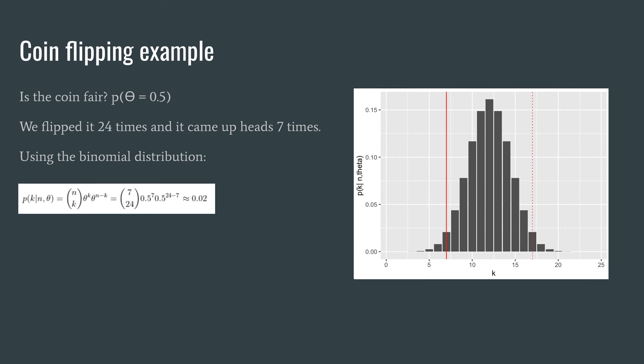So here we plug in these three numbers, 0.5, seven and 24, and we get back 0.02 which is shown as the red line in the histogram on the right. So we can see that if the coin were fair it's fairly unlikely that we'd get this result, seven heads on 24 flips.